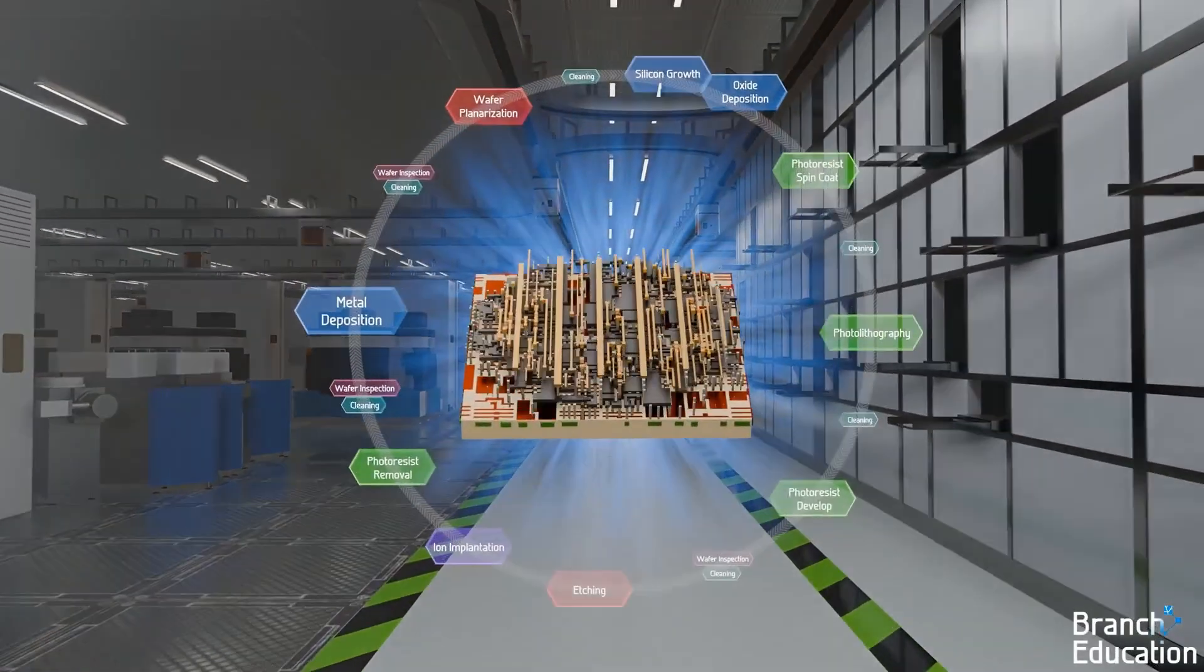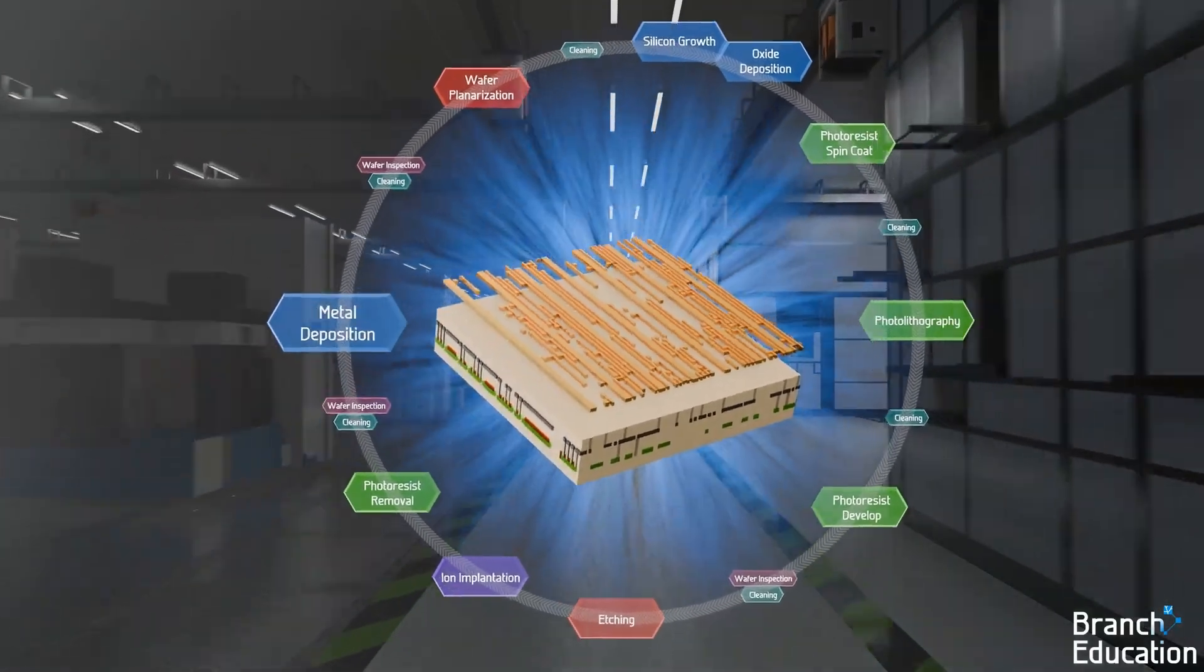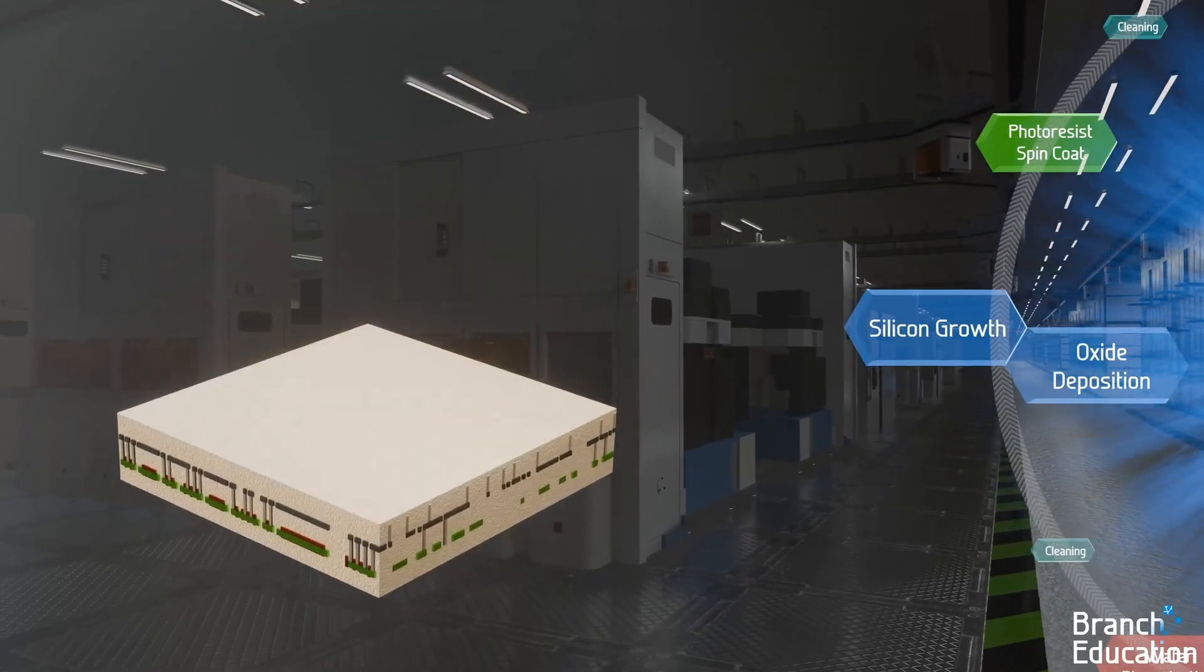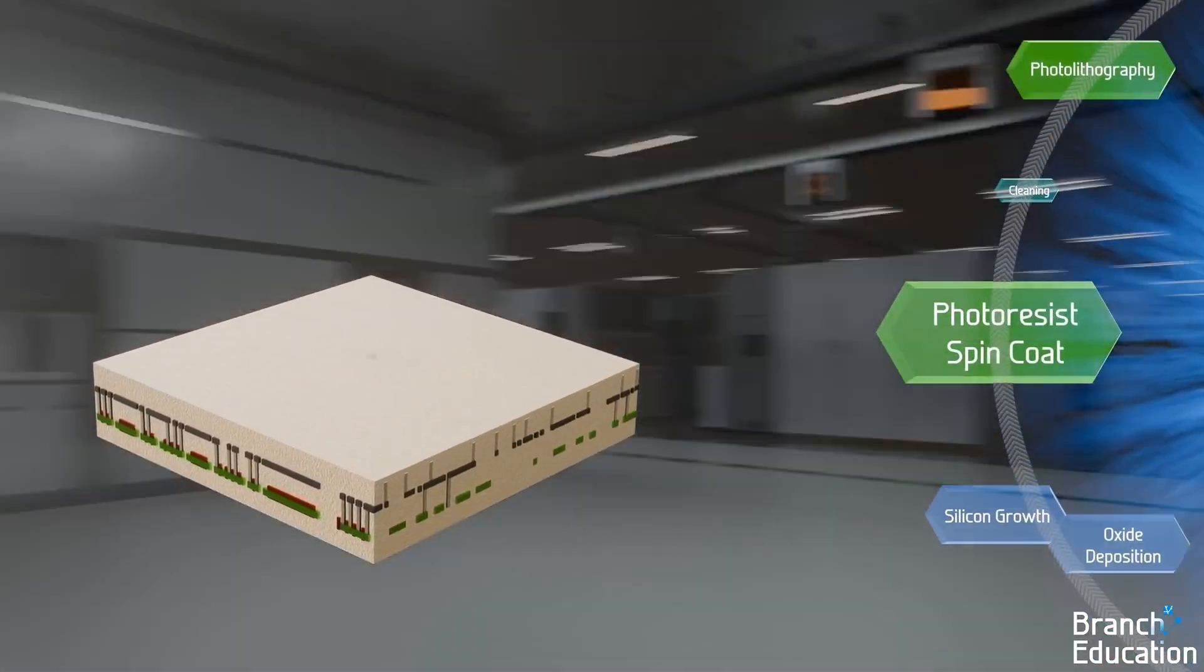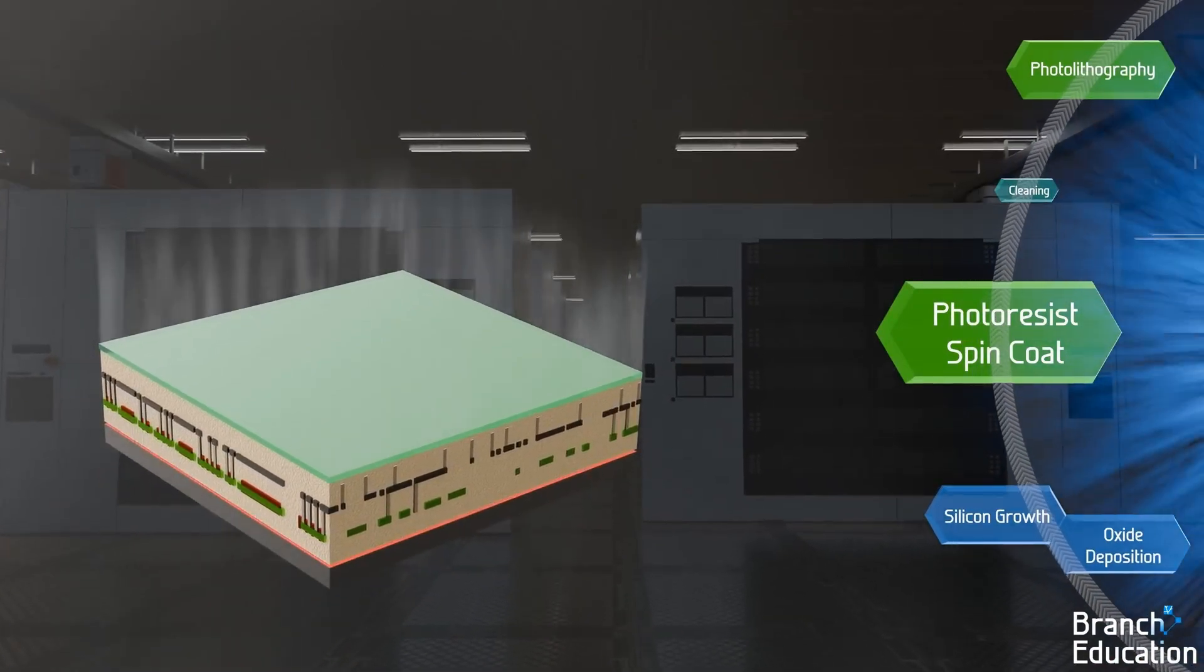Let's run through the complete set of steps used to manufacture a single metal interconnect layer. First, a layer of insulating silicon dioxide is deposited onto the wafer. Next, photoresist is spread across the surface, and the wafer is sent through a soft bake to remove the solvent.